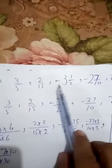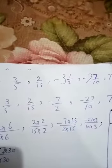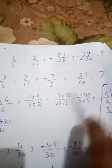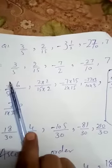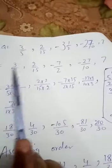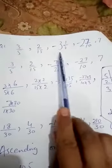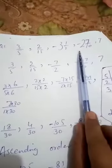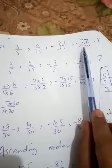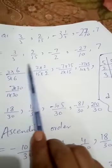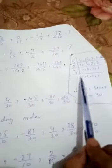Now this is the question: arrange 3/5, 2/15, −3 and 1/2, −2 and 7/10, and 7 in ascending and descending order. There are five rational numbers. First we change the mixed numbers into improper fractions: 3/5, 2/15, −7/2, −27/10, and 7. The denominators are 5, 15, 2, 10, and 1, and then we take the LCM.